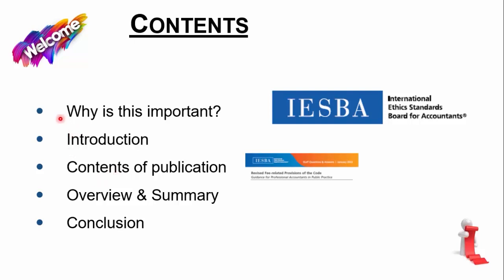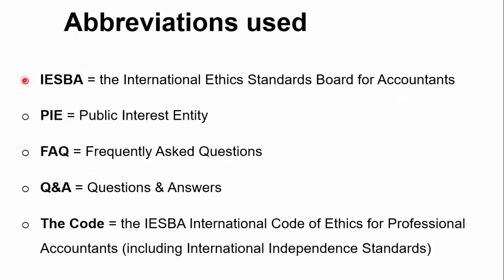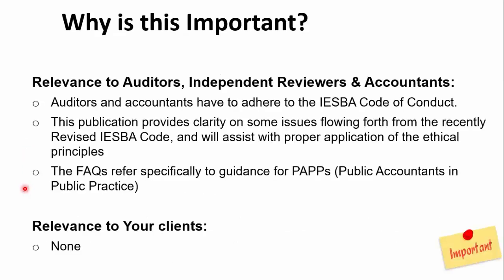Let's quickly look at the abbreviations used on my slides. IESBA is the International Ethics Standards Board for Accountants — a board of IFAC. IFAC has two legs: IESBA and the IAASB. Whenever I talk about 'the code' today, I'm talking about the IESBA International Code of Ethics for Professional Accountants, which includes the International Independence Standards. PIE is a public interest entity. FAQ means frequently asked questions, and Q&A means questions and answers.